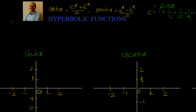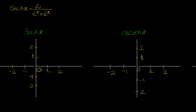Let's start with hyperbolic secant x. What is sech(x)? sech(x) is equal to 1 by cosh(x), that is 2 by (e^x + e^(-x)). If I substitute x equal to 0: e^0 is 1, e^(-0) is also 1, so 2 by 2 equals 1.